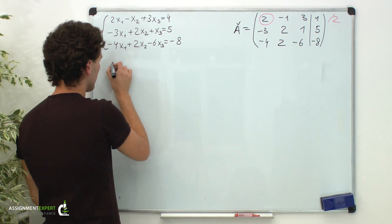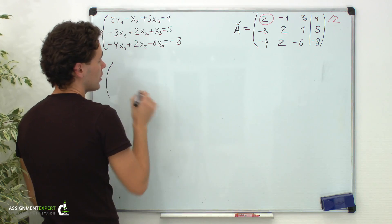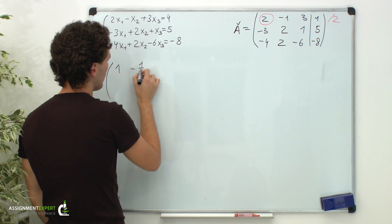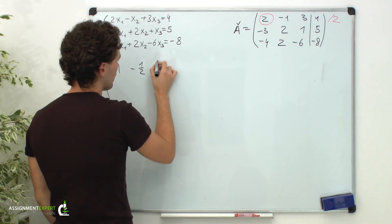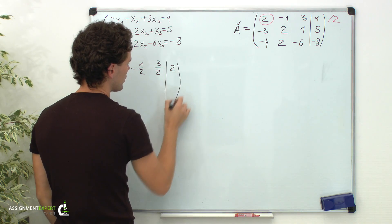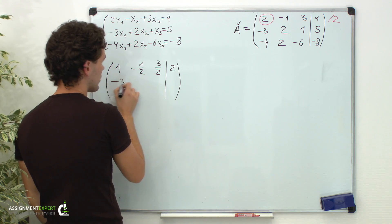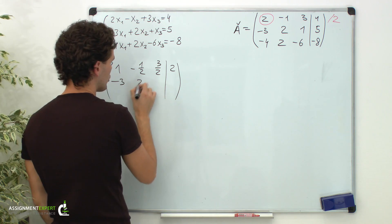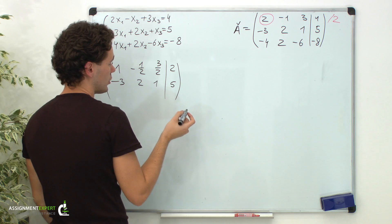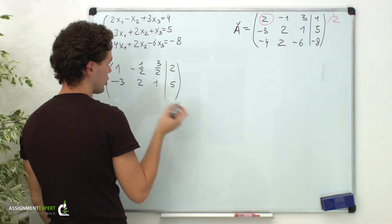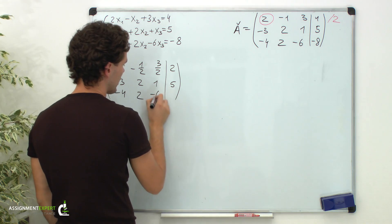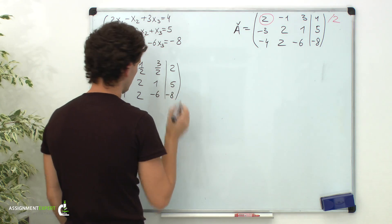As a result, we get the following. The first row is 1, negative 1 half, 3 halves, and 2. The second row is negative 3, 2, 1, and 5. And the third row, without any changes, is negative 4, 2, negative 6, and negative 8.